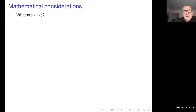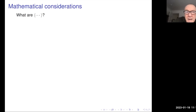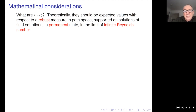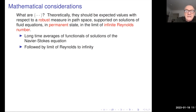Let's do a little bit of mathematical consideration. Theoretically, the averages should be expected values with respect to a robust measure in path space, supported on solutions of fluid equations in a permanent state in the limit of infinite Reynolds number. Those are very nice words. Let's try to understand in what order we need to take things: we need to be in a permanent state, so take long-time averages of functionals — observing the velocity at a point, or bulk quantities like the average dissipation in the flow.